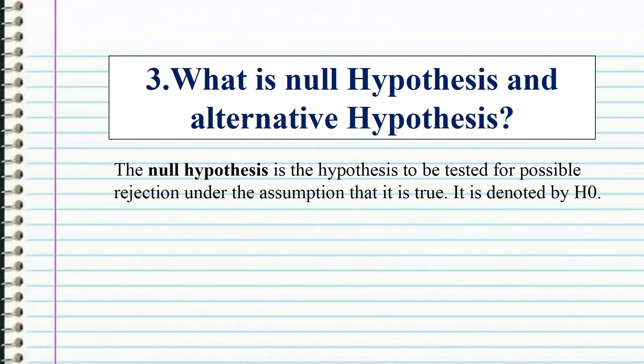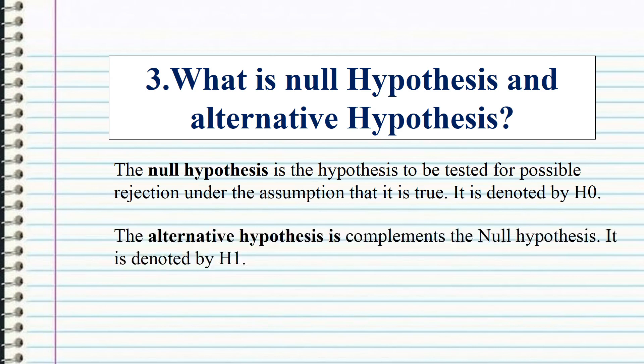The null hypothesis is the hypothesis to be tested for possible rejection under the assumption that it is true. It is denoted by H0. The alternative hypothesis complements the null hypothesis and is denoted by H1.